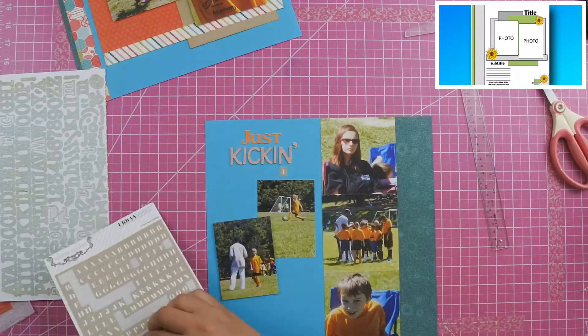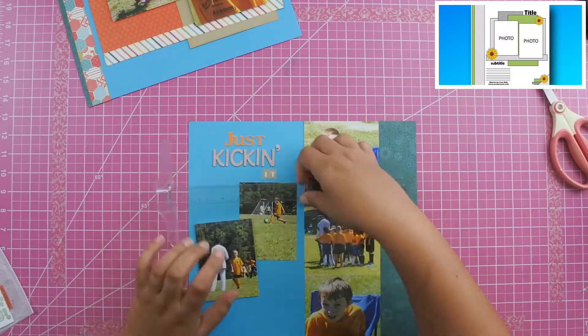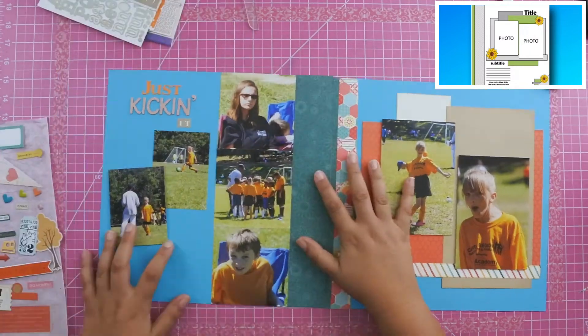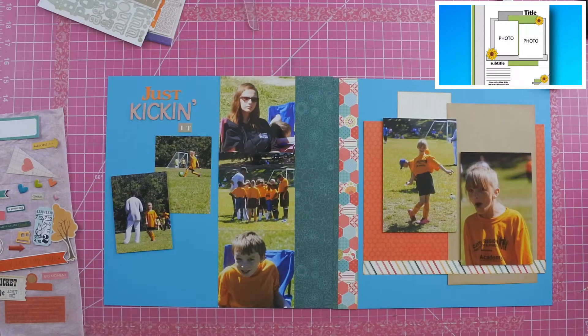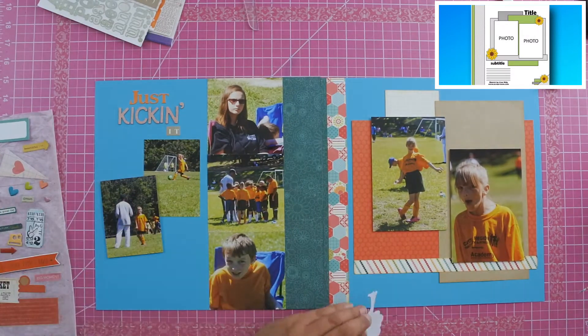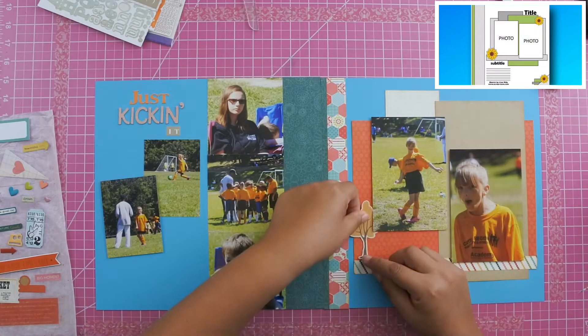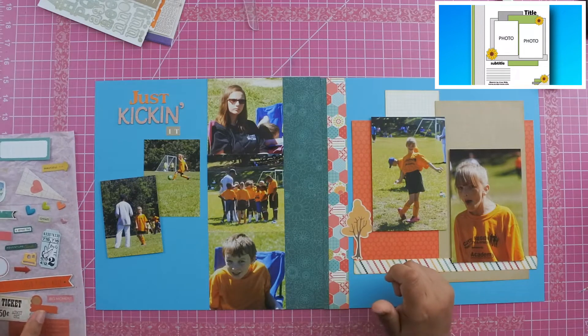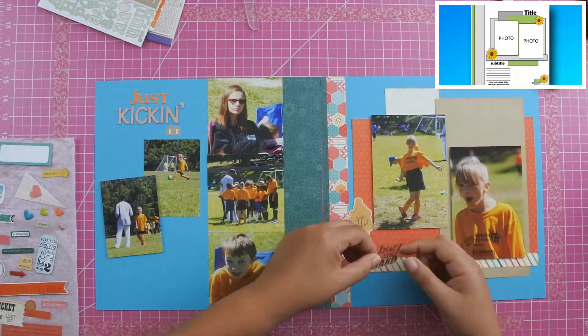Once I get all of that down, I did pull out my embellishment book and pull some embellishments for this particular layout, because the stickers and the other pieces that go with this paper don't really go with soccer. So I pulled out some of my own embellishments to try to fill in the embellishment clusters. I'm going to start out with this orangey color tree and I really like the way that it sits right there.